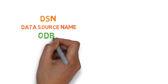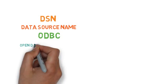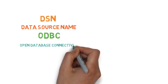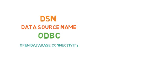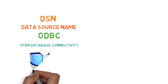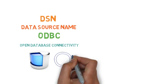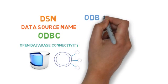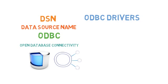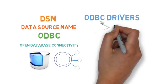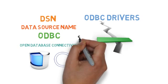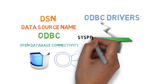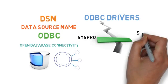A DSN is defined in ODBC so that it can find the location of the data. ODBC is an interface standard for accessing data and communicating with database systems, irrespective of the operating or database system or programming language. This is done using ODBC drivers. These drivers are a bridge between applications — in this case Syspro — and database systems — in this case SQL Server.